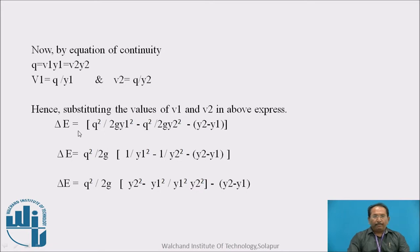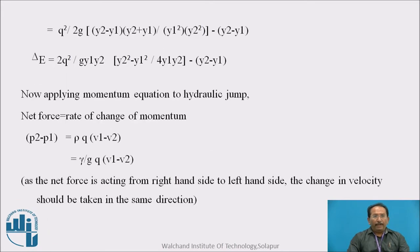Therefore, q is equal to v1 into y1 and v2 into y2 as a continuity equation. Further simplifying, we will get the equation delta E is equal to 2q square upon g y1 y2 square into bracket y2 square minus y1 square upon 4y1 y2 minus into bracket y2 minus y1.